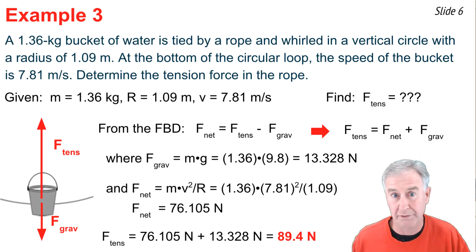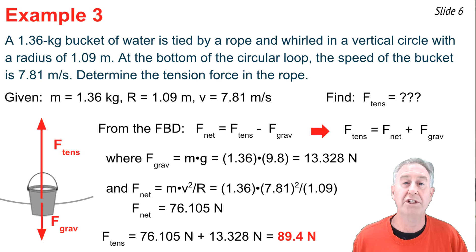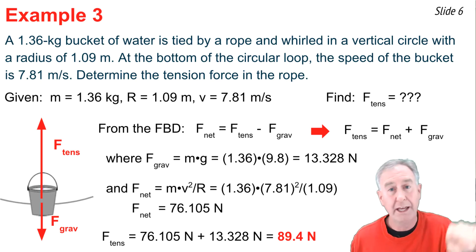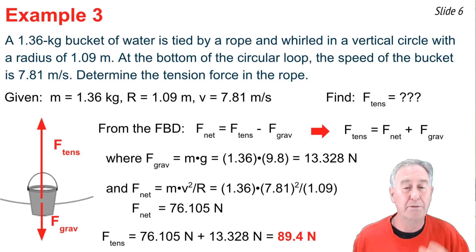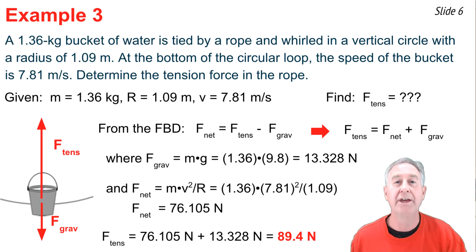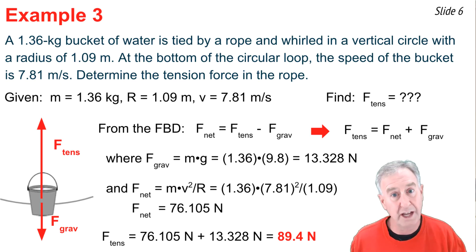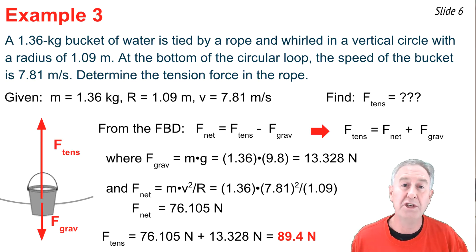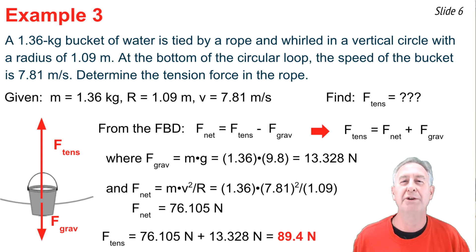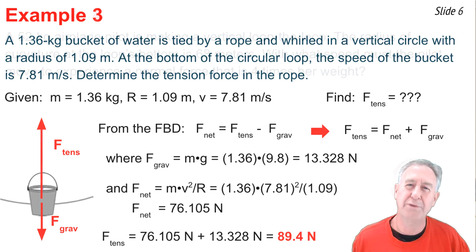It's worth noting that this tension value is much greater than in Example 2 at the top of the loop, for two reasons. First, the speed is greater because the bucket has sped up traveling downward. Second, tension must overcome the outward force of gravity and still have enough left over to produce a net inward force.